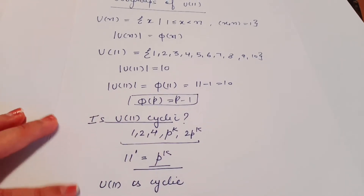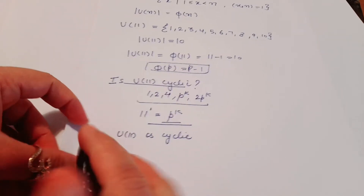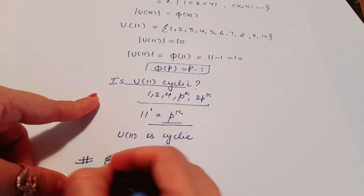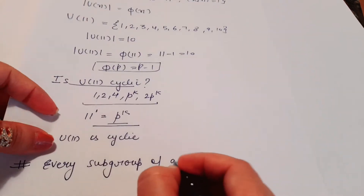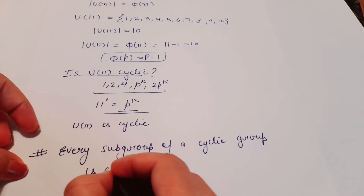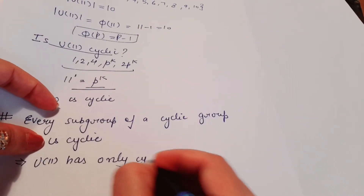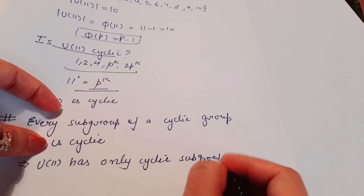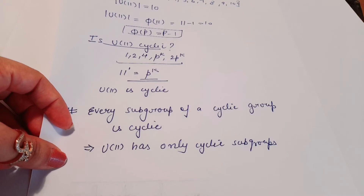In that video I mentioned three methods to check if U(n) is cyclic. Since U(11) is cyclic, and every subgroup of a cyclic group is cyclic, this implies that U(11) has only cyclic subgroups. Now, can we count the number of subgroups? There is a short trick for counting subgroups of a cyclic group.